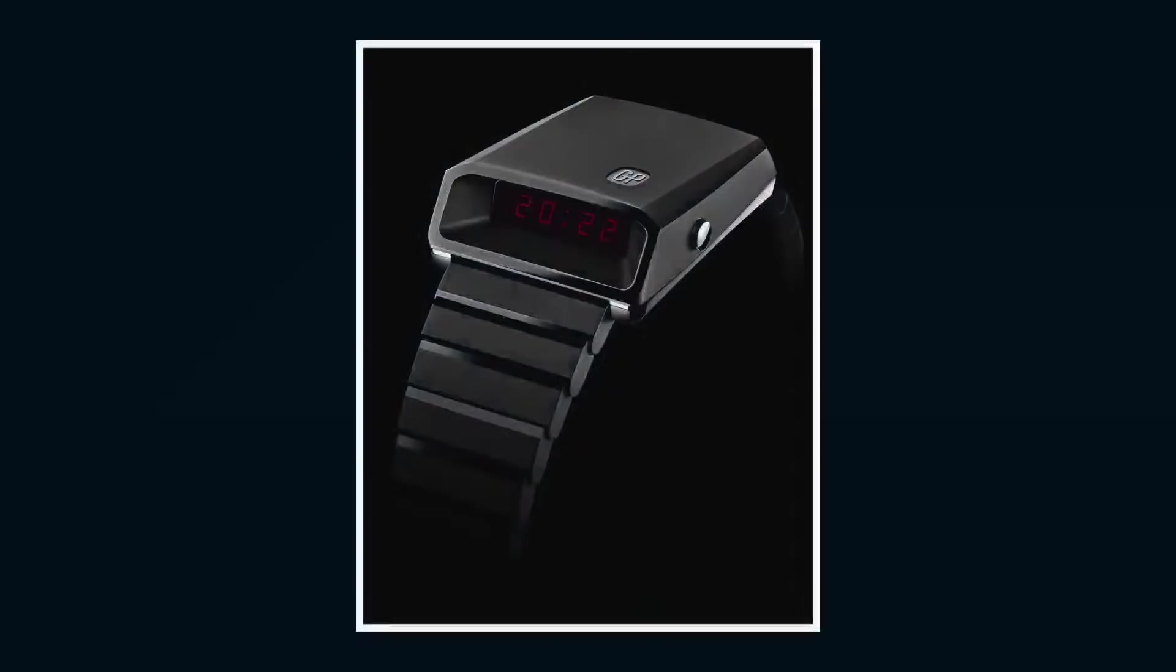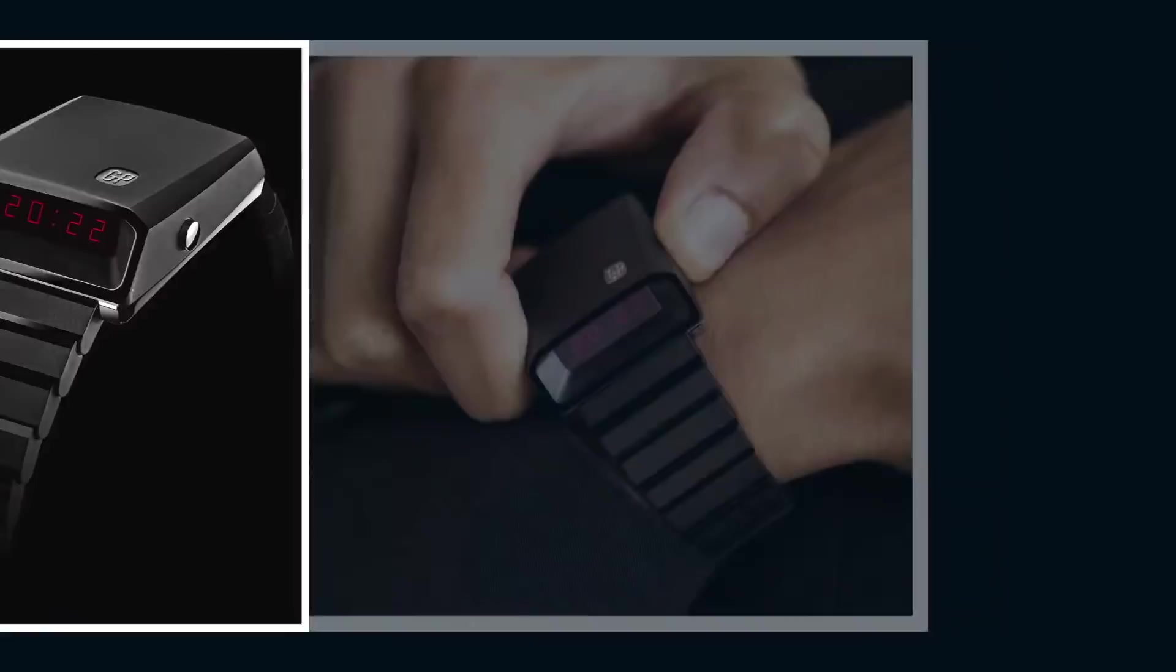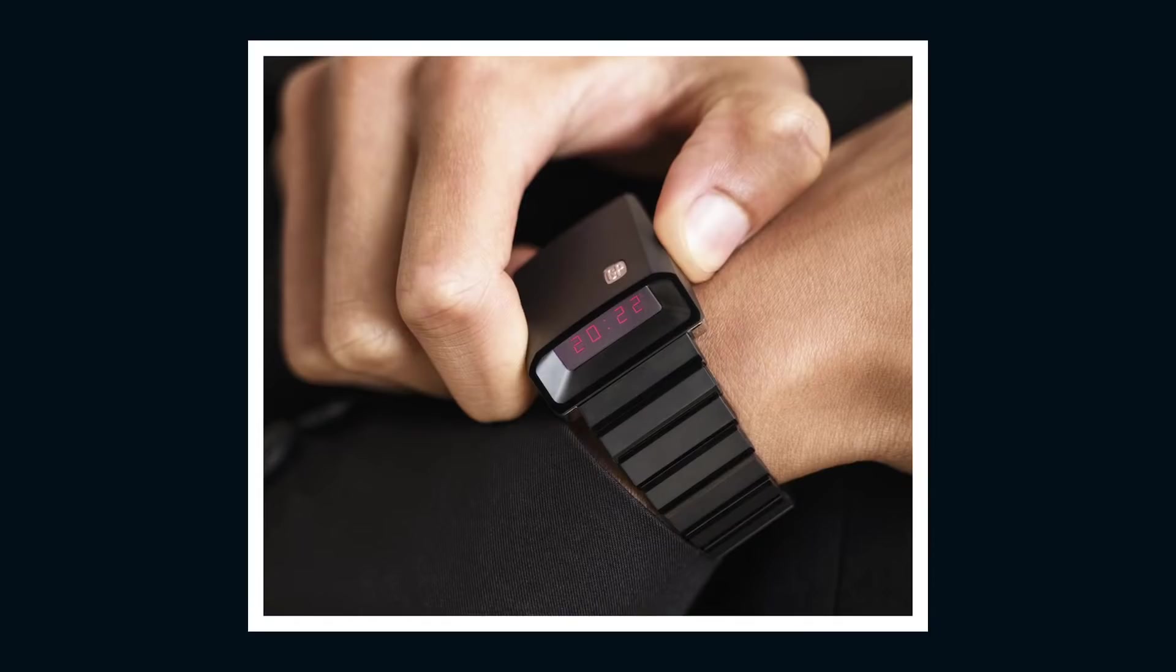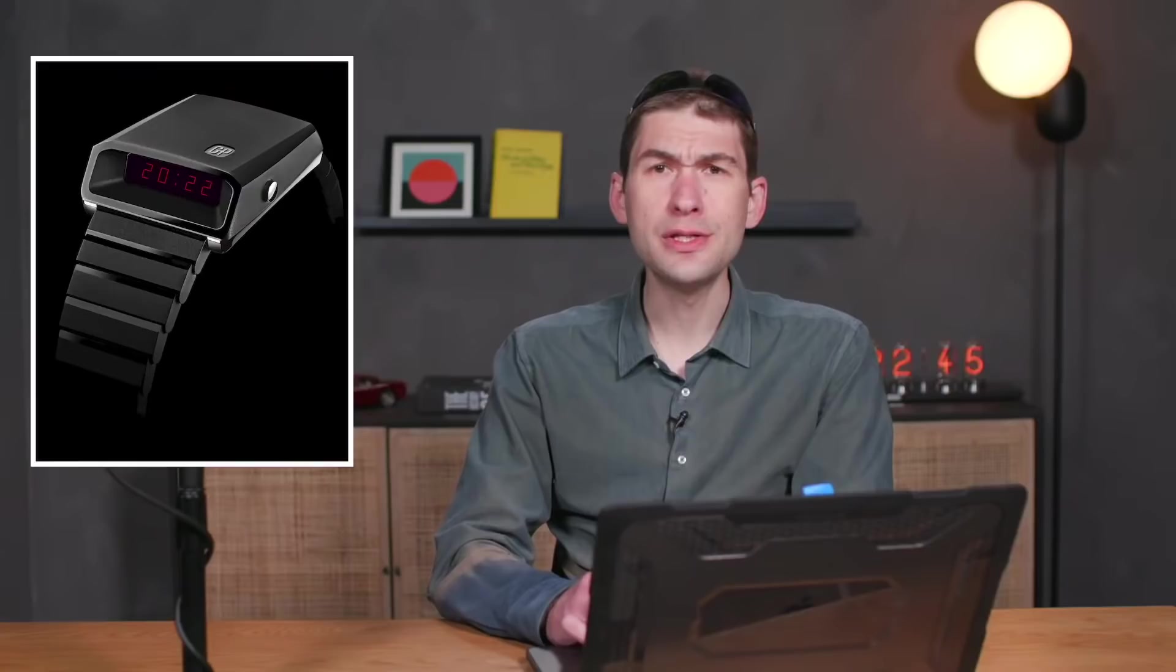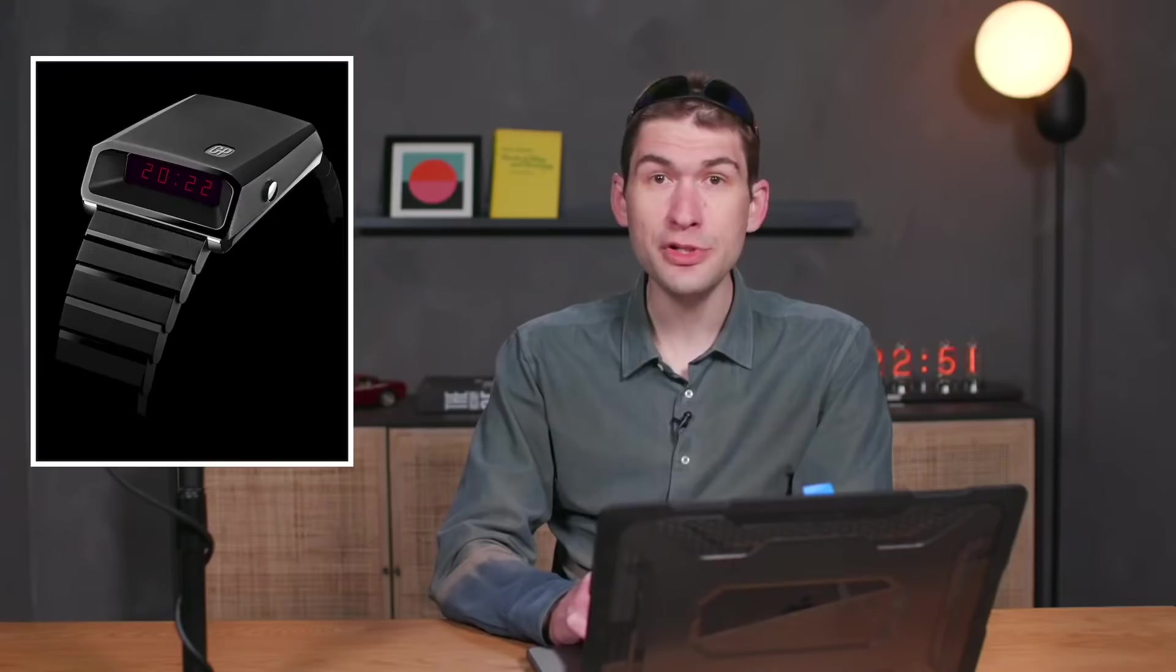So the watch includes new functions along with the original time and date. We gain a chronograph, a secret date that will highlight an on-demand day, date, and year, and we have a second time zone with an expanded calendar. We have LED display, and it only appears on demand, so it has a two-year battery life, assuming you actuate the LED display 20 times a day. 820 units will be offered at a retail price of $4,700.